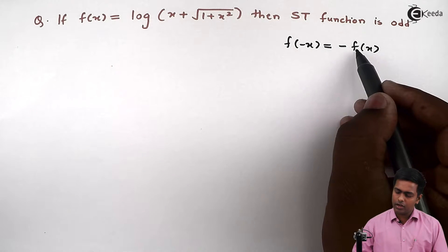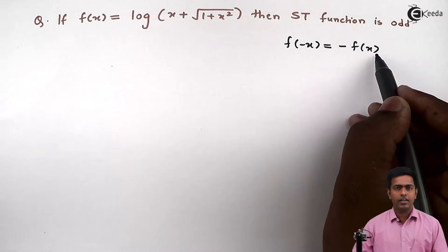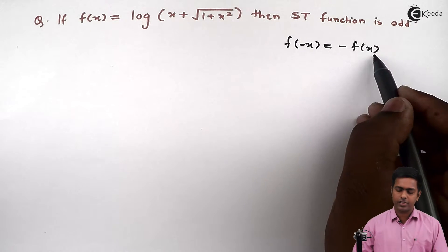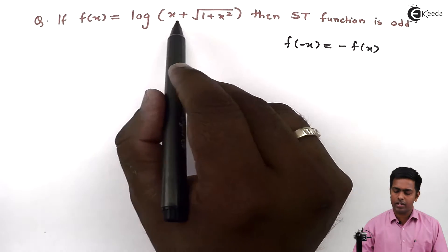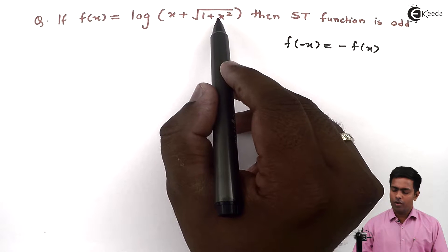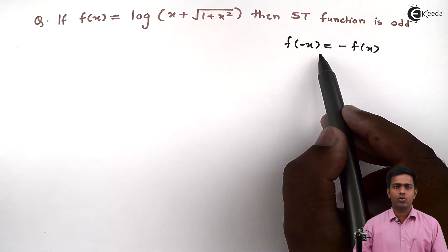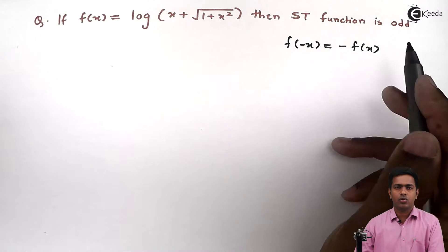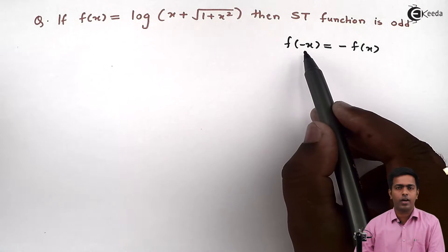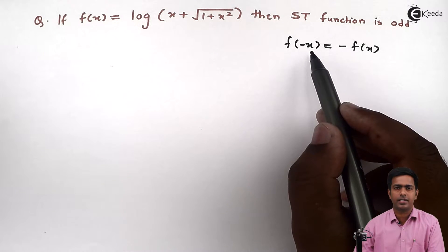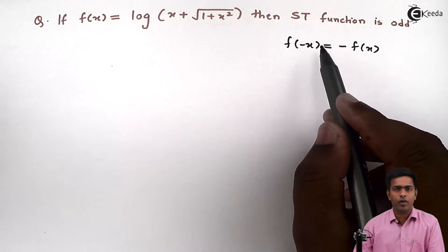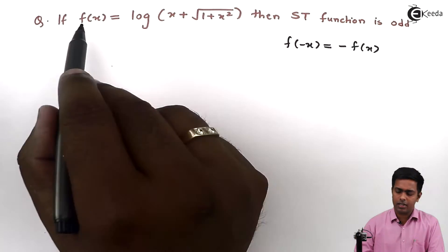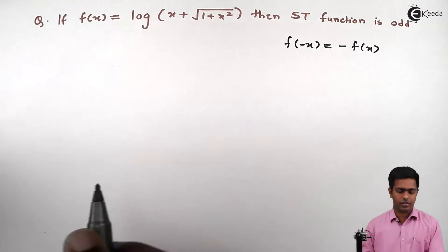On the right hand side we have -f(x), and the value of f(x) is already given in the question. So we will start with the left hand side, where we have f(-x). To find the value of f(-x), I will replace x by -x in f(x).